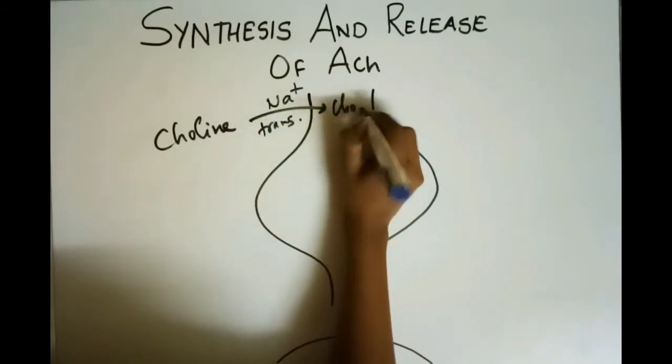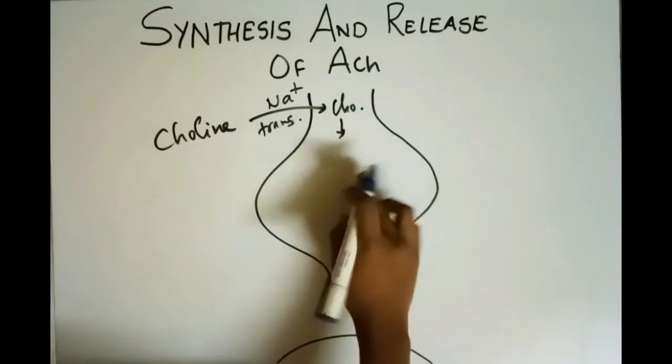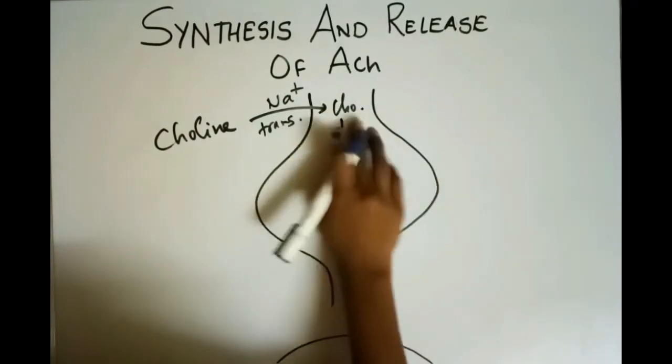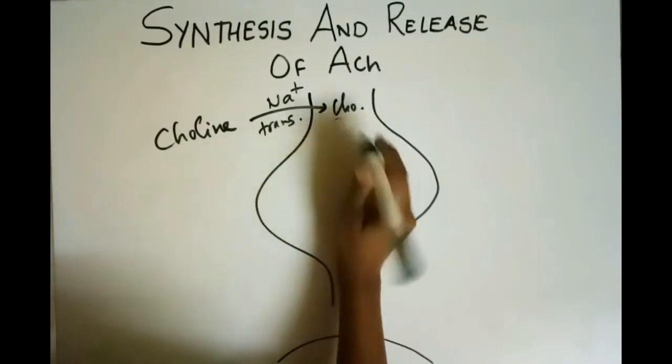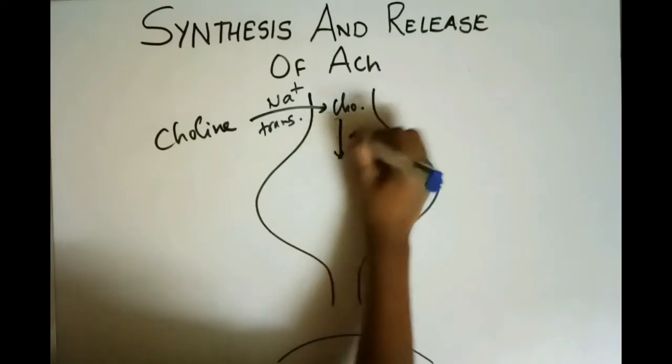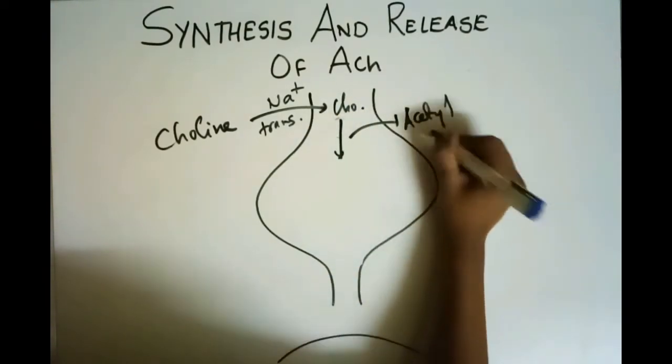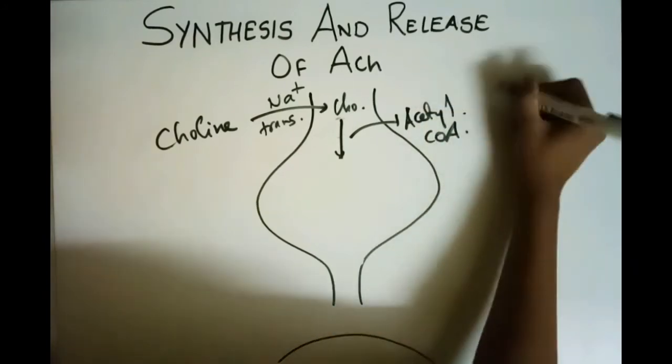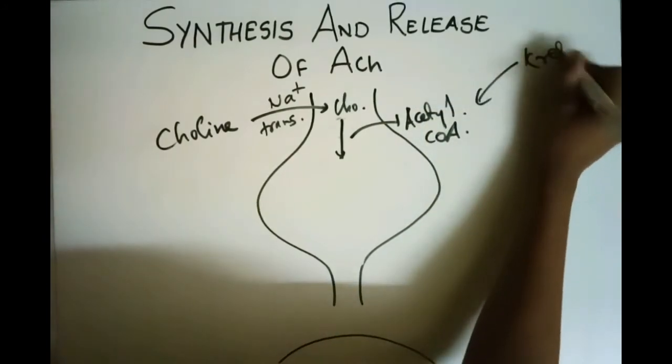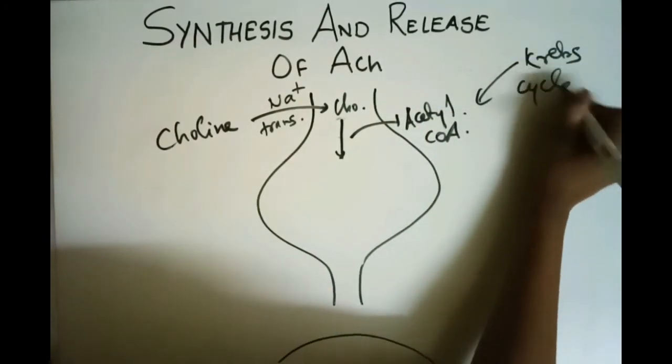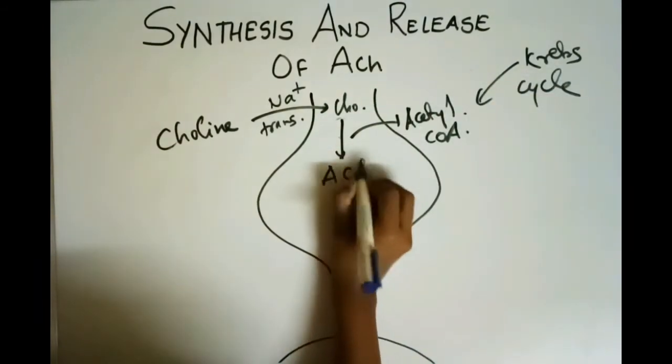This will bring the choline inside the presynaptic neuron. Then the choline will combine with acetyl coenzyme A. This came from Krebs cycle and then we will get acetylcholine.